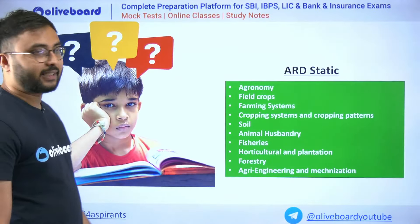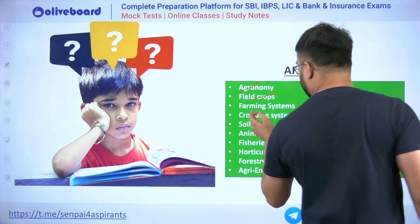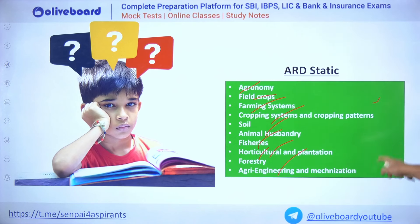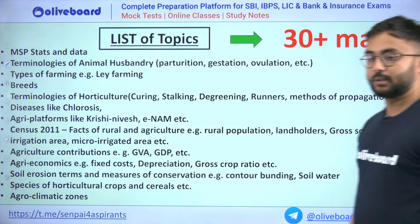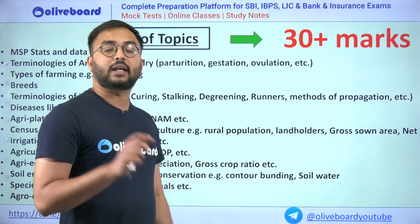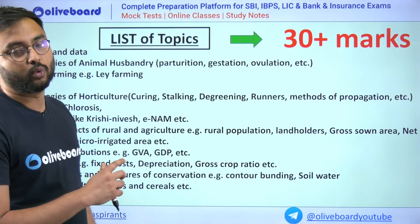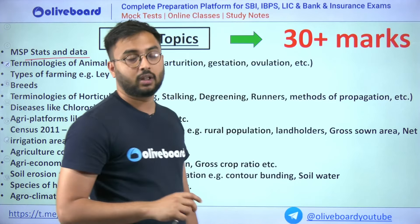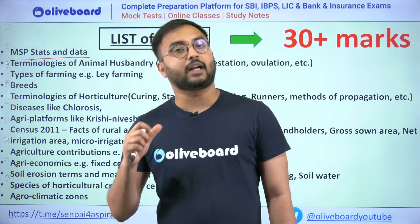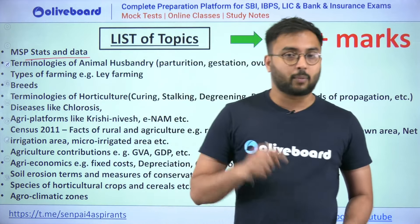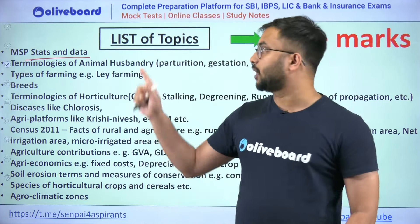For the static syllabus, remember these most important recurring chapters: agronomy, field crops, farming systems, cropping systems, cropping pattern, animal husbandry, fisheries, horticulture, forestry, and agri-engineering and mechanization. Now for the list of important topics for this year: first is MSP stats and data. Refer to the economic survey, NABARD website, and overall agricultural facts for this year. MSP data includes how many crops are in the MSP list and what the minimum support price of each crop is — pricing questions have been asked.